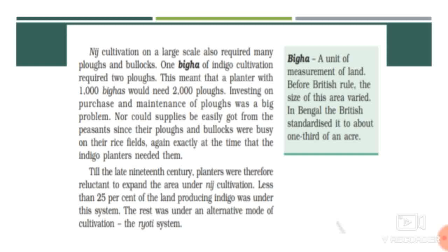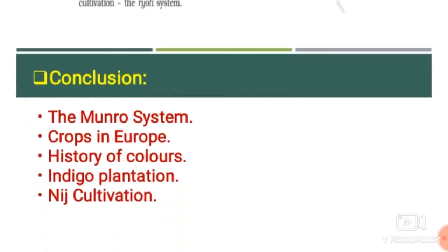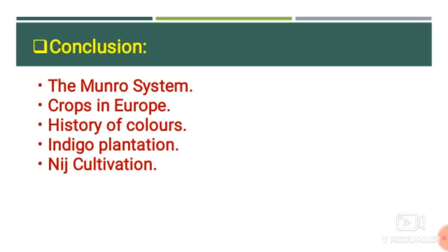Because of all these problems, planters were reluctant to expand Nij cultivation. Less than 25% of the land producing Indigo was under this system. The remaining 75% was under the alternative mode — the Riyoti system — which we are going to learn in the next part.